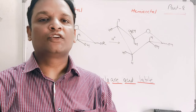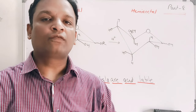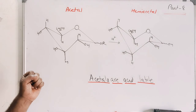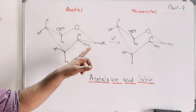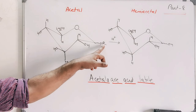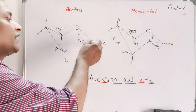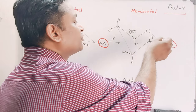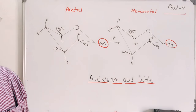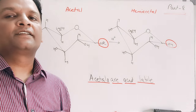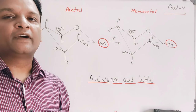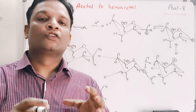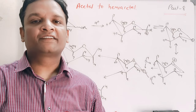When you add acid to the acetal solution, it reverts back to the hemiacetal form. You can see here — this is glucose in pyranose form and this is the glucose acetal structure with OR. Whenever we add acid to the acetal, it reverts back to the OH form, which is the hemiacetal form. This is a very important point to note.